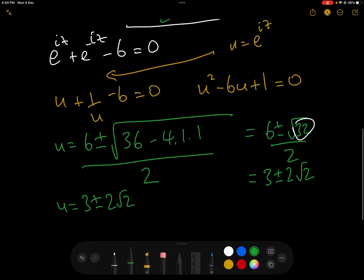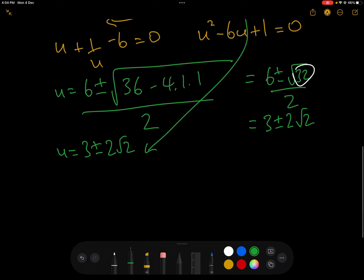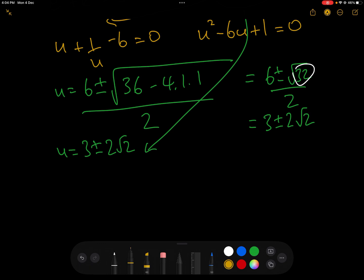And remembering that u is e^(iz), I'm bringing that down. We have e^(iz), excuse me, e^(iz). Remember, z is what we want to find. So e^(iz) = 3 ± 2√2.